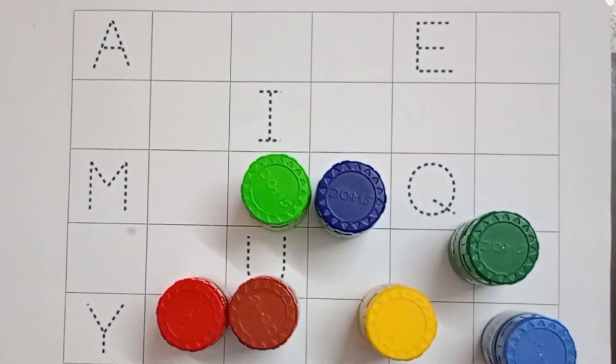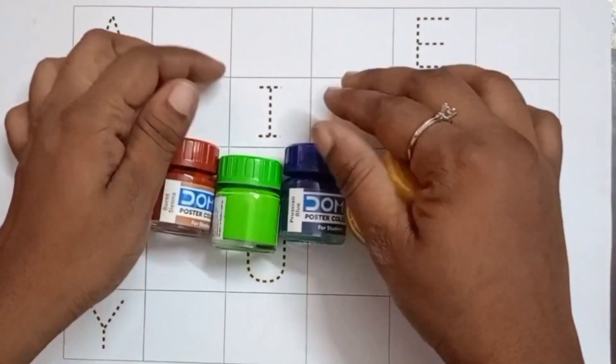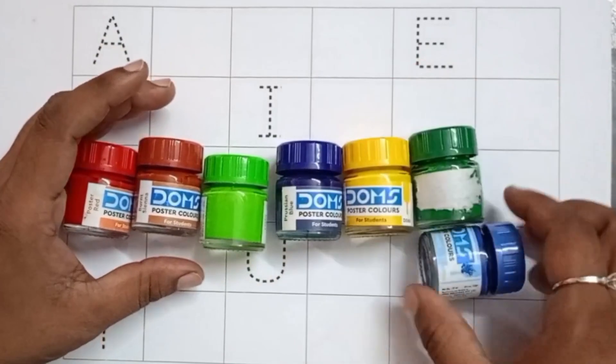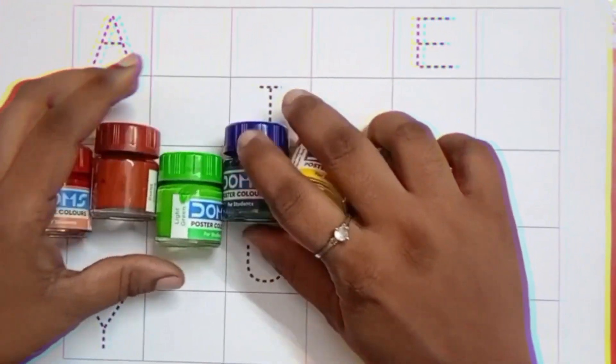Hello, kids. In today's video, we are going to learn A for Apple, B for Ball and Colors. Let's go, kids.